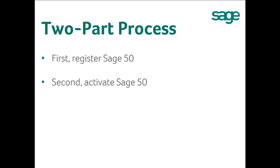Activation is a two-part process. First, you register your software with Sage. Second, you enter your Sage 50 software information to activate the program.